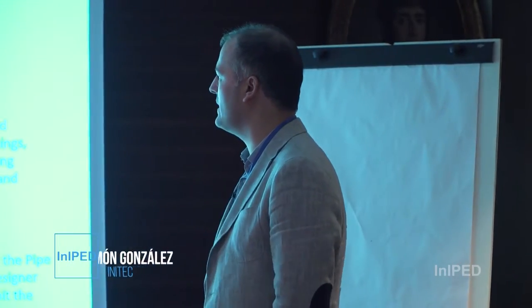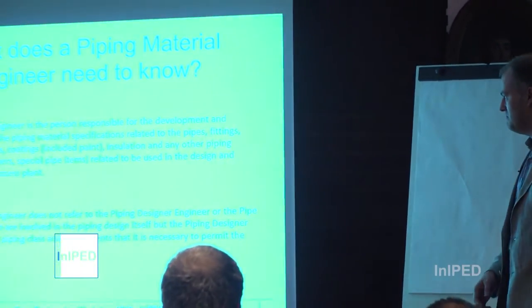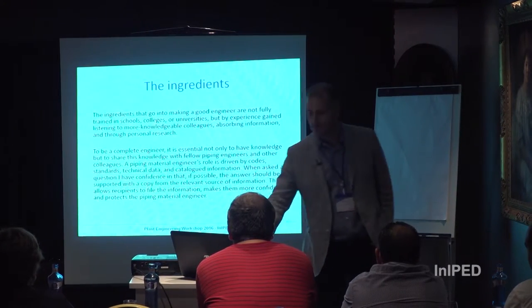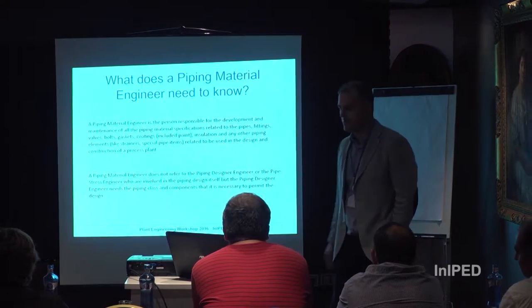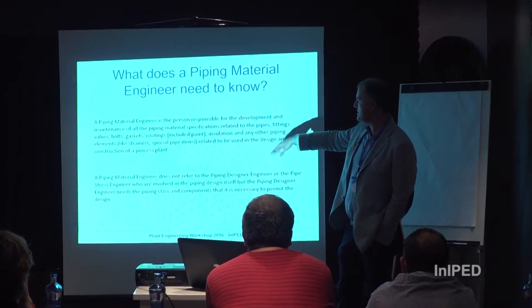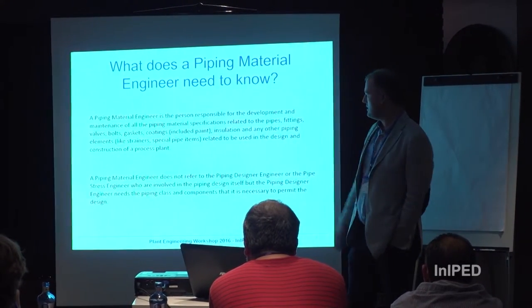I am the coordinator of the paper material, but the part that made the proposals. I want to explain something about my department. The piping material engineer is for any type of engineer — the person responsible for the development and maintenance of all the piping material specifications related to pipes, fittings, valves, and other piping elements used in design, construction, and process plants.